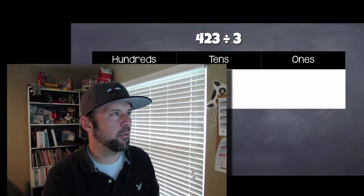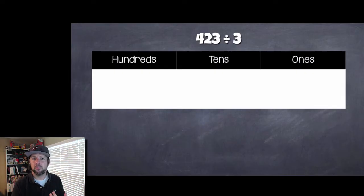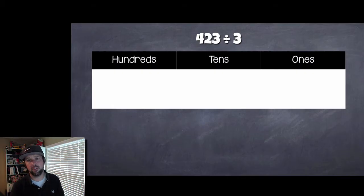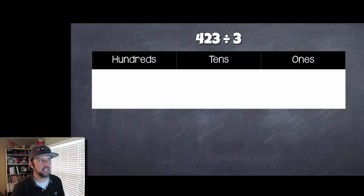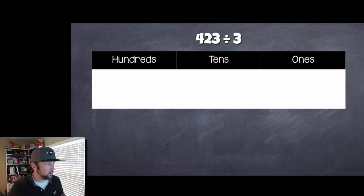If I shake this bag, it seems like I have probably right around 423 Sour Patch Kids left in there. So I like them, Mrs. Walker likes them, and my daughter likes them. We're going to divide that 423 by 3 to make sure that everybody gets an equal amount. Now, I know I already ate a bunch of them, but don't tell them that. We want to make sure that what's left, everybody gets an equal amount.